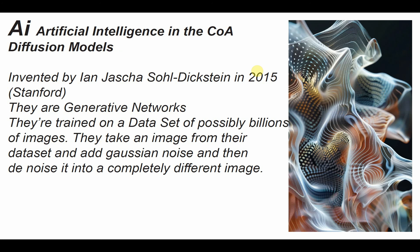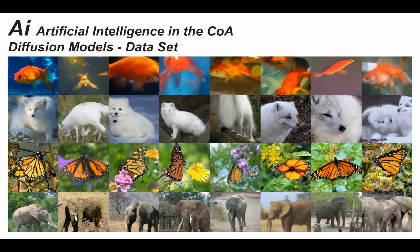Diffusion models are behind the popular image generators like DALL-E 3, Mid-Journey, and Stable Diffusion. These models learn from a data set by recognizing patterns in images. Stable Diffusion models turn images into Gaussian noise and then reverse the process by responding to text prompts — Gaussian noise is turned into images that match the text prompt. Here is an example of a data set used to train a diffusion model: this one is trained on fish, wolves, butterflies, and elephants.